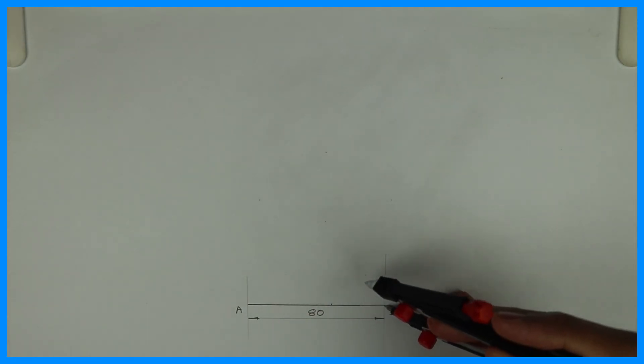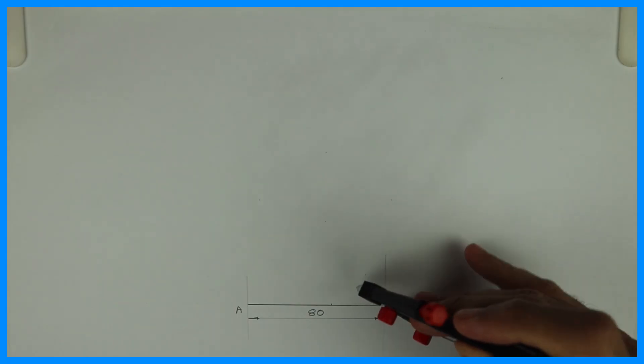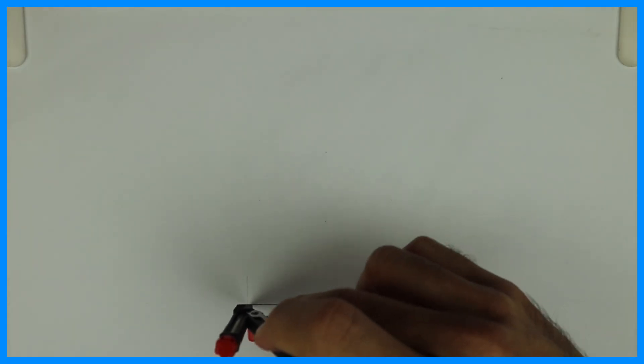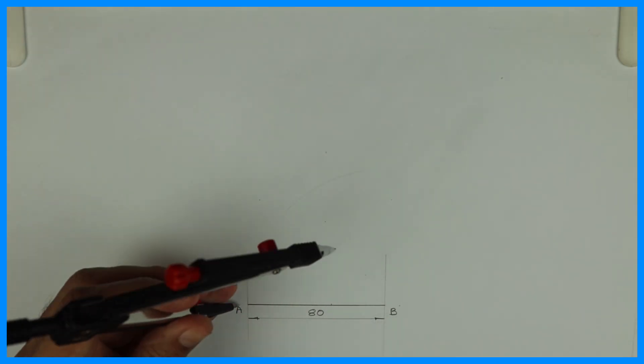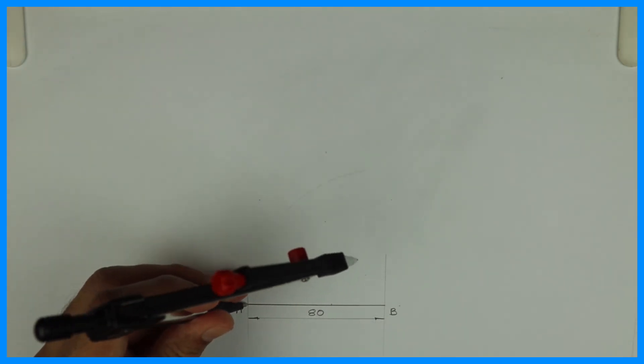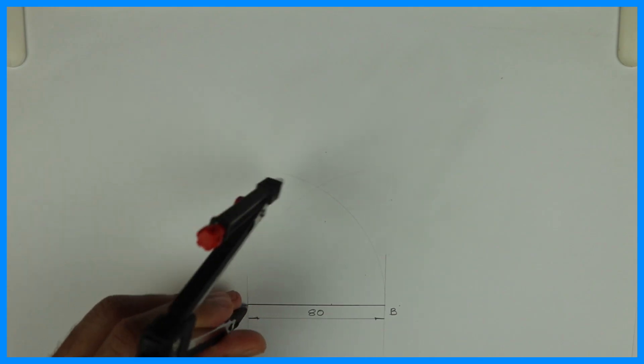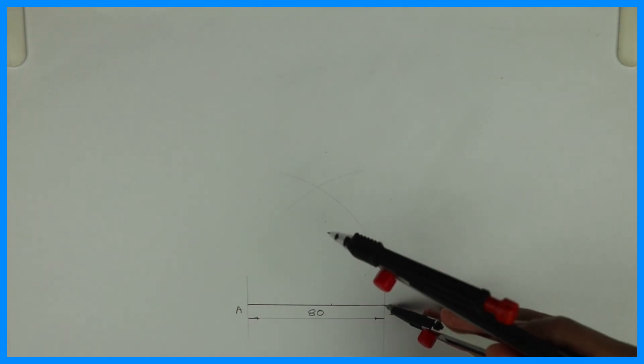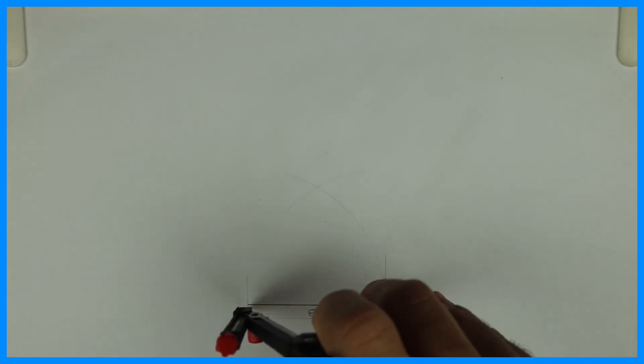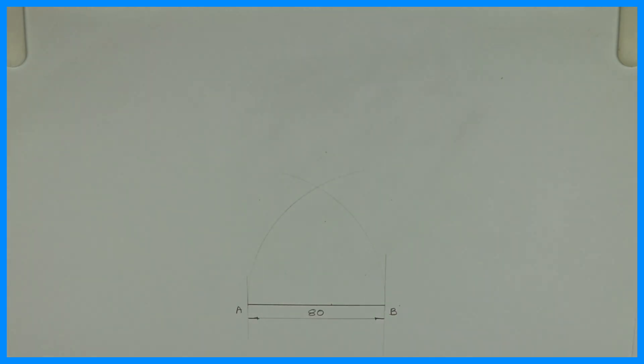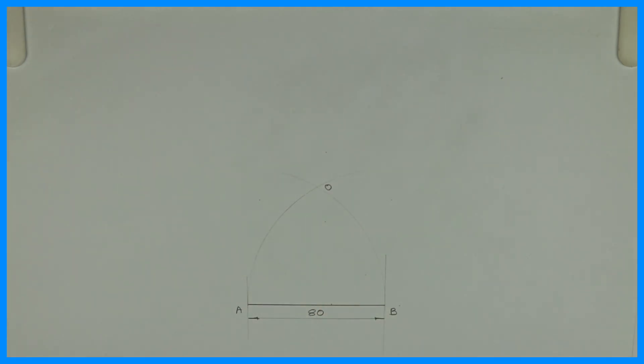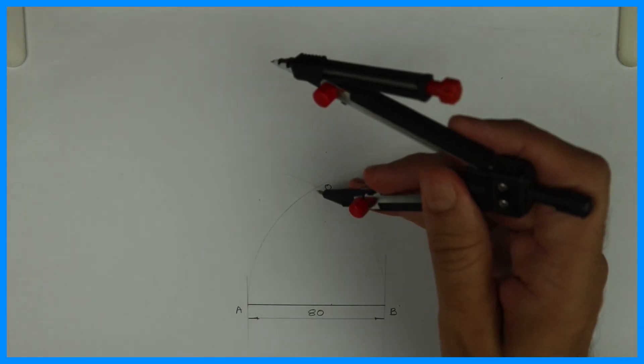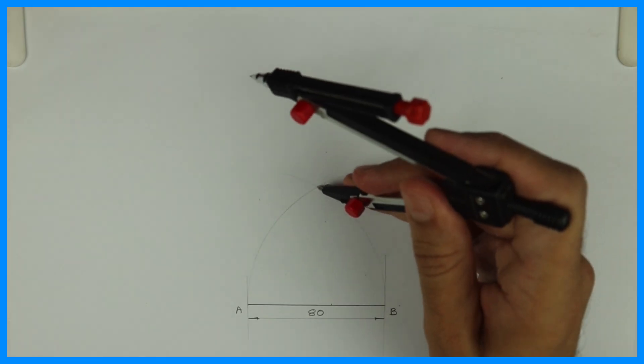Then you take B to A and draw an arc. So basically you take side 80 and draw arc from B as well as from A, like how we draw equilateral triangle. See B to A and A to B. Wherever it will intersect, that is point O. Then take O to A and draw a circle.